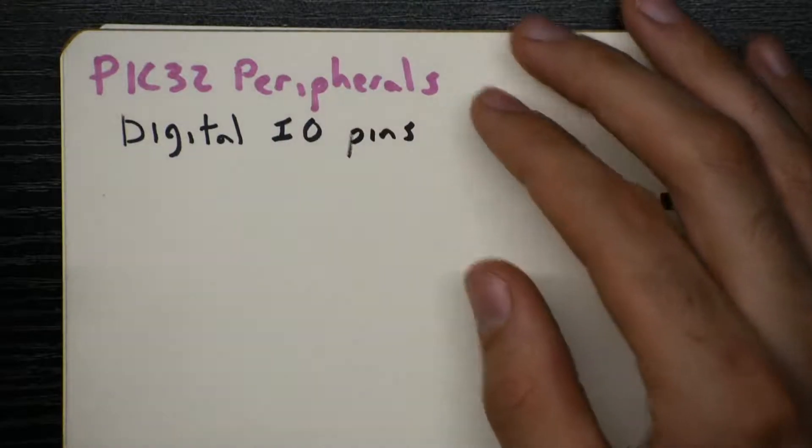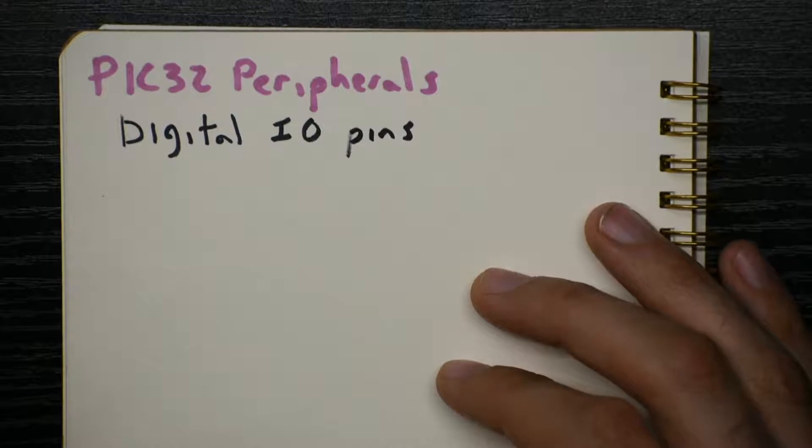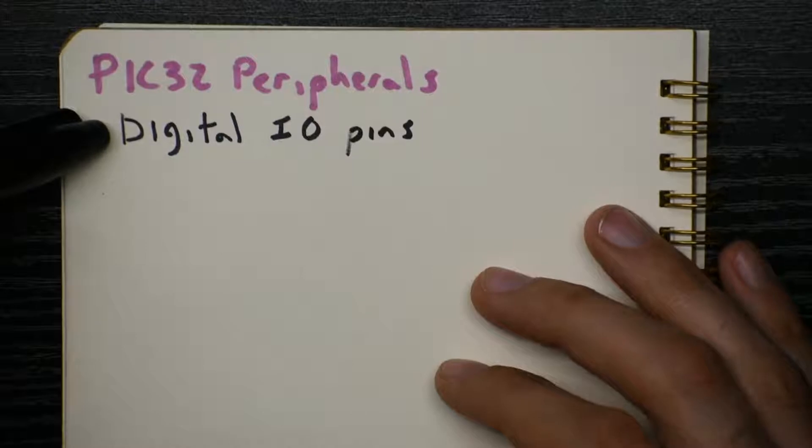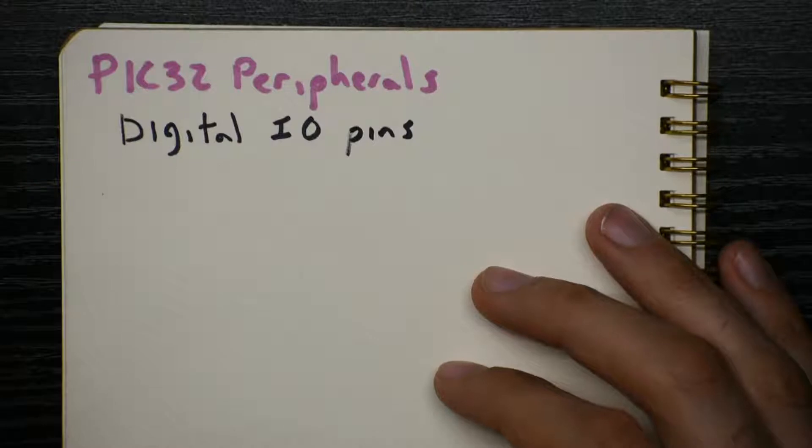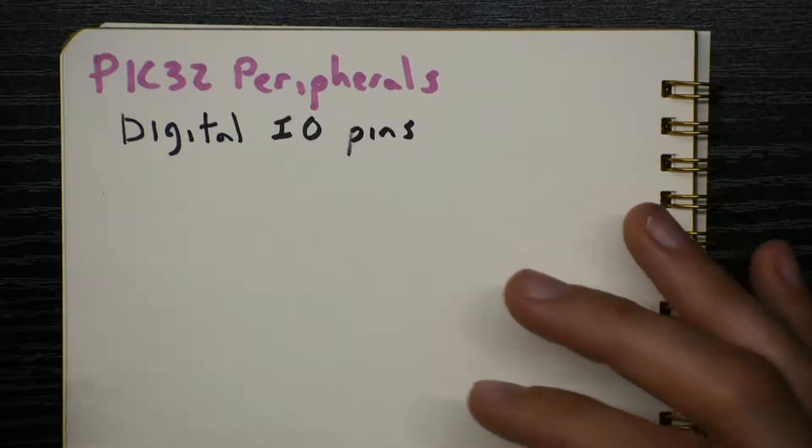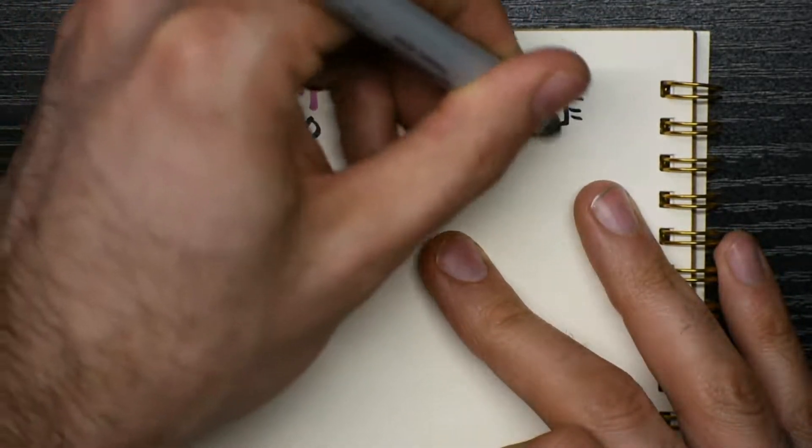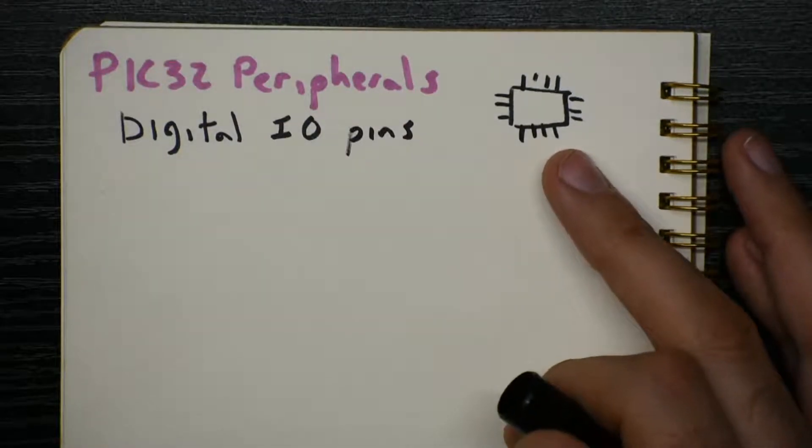So the peripherals are the little add-ons that the SFRs use to control the real world. We'll start simple. This is from chapter 7 of our textbook. Let's review how the digital I.O. pins work. The I.O. pins mean the input and output pins. So the PIC is surrounded by pins. When you look at a picture of the PIC, it's got legs all over it. Most of those legs are I.O. pins.